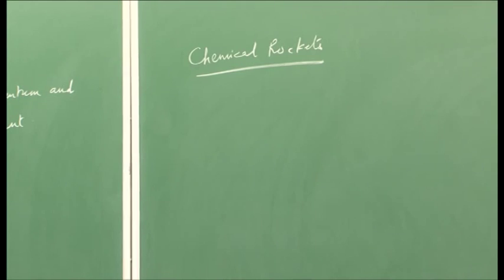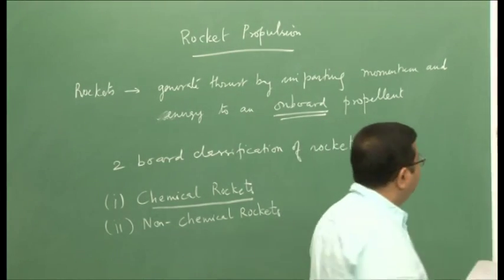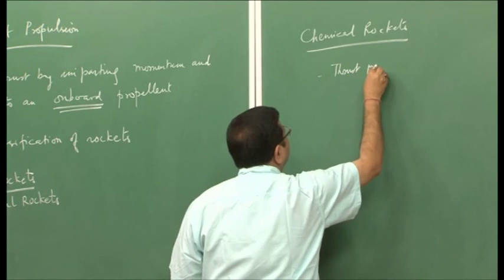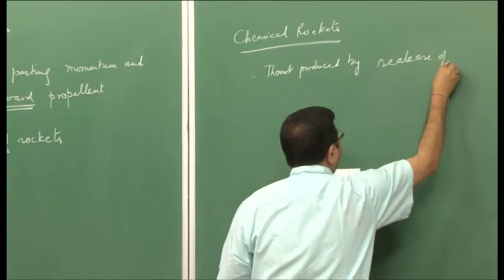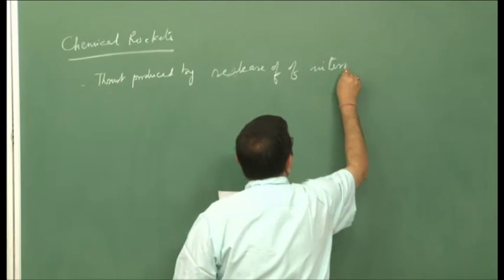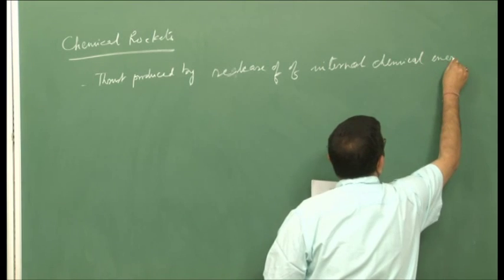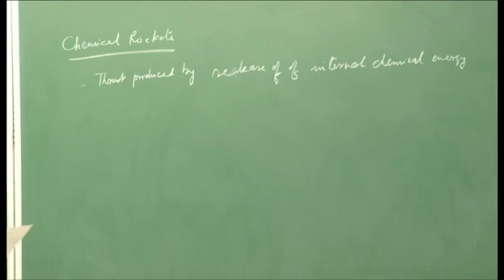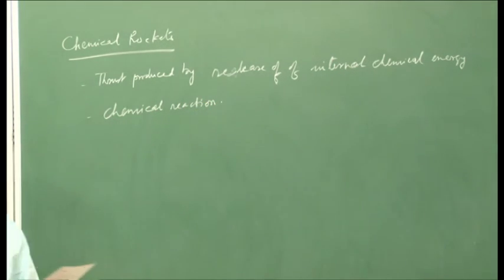As the name suggests, chemical rockets generate thrust through the release of internal chemical energy of the propellant. Thrust is produced by the release of internal chemical energy of the propellant, and that energy can be released only through chemical reaction. So the primary source of thrust production in chemical rockets is the chemical reaction.